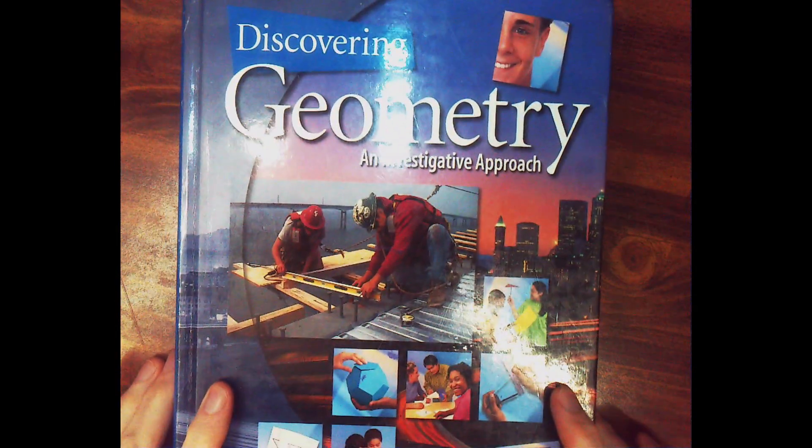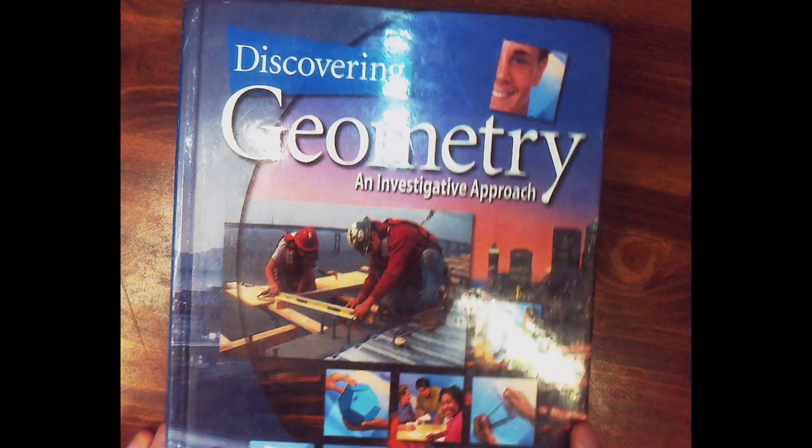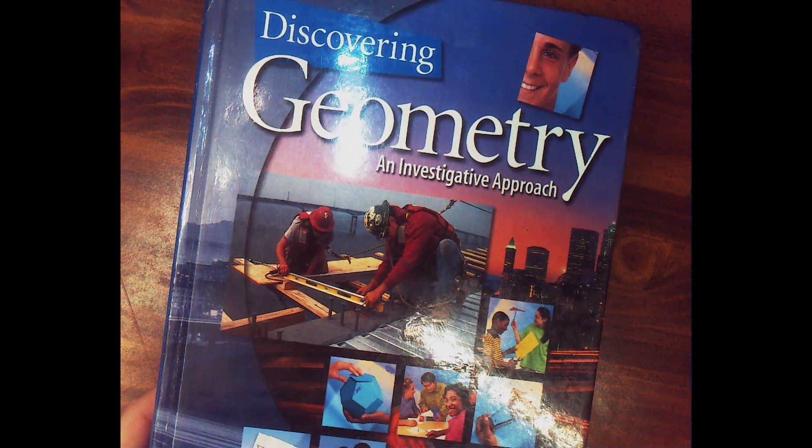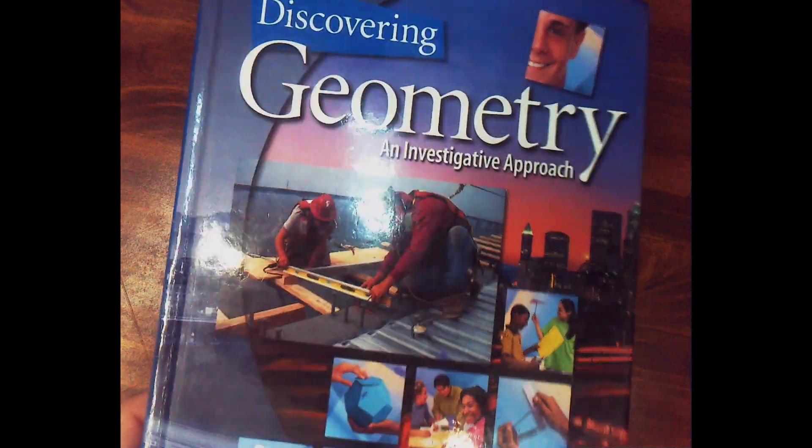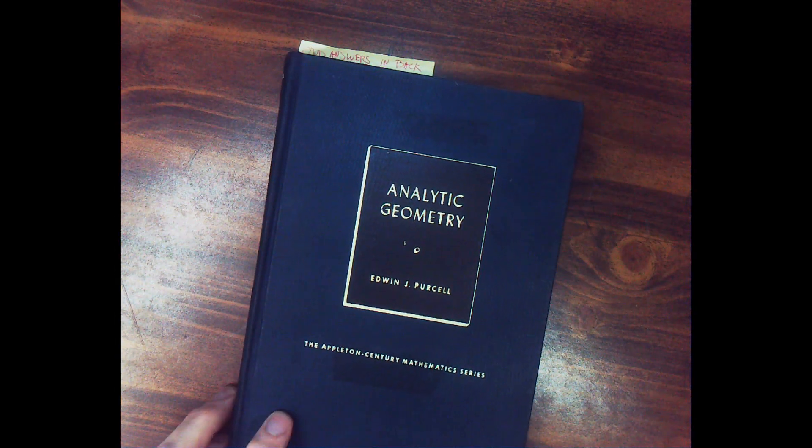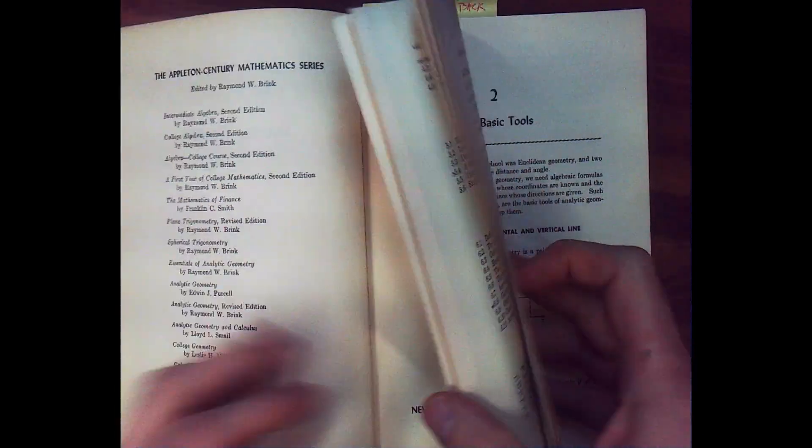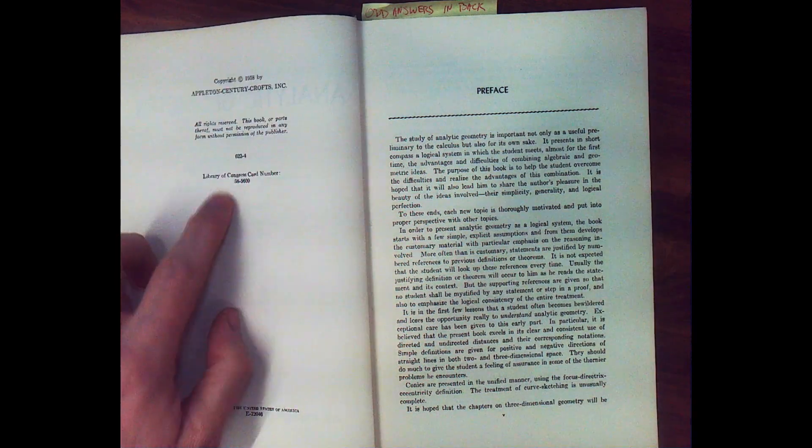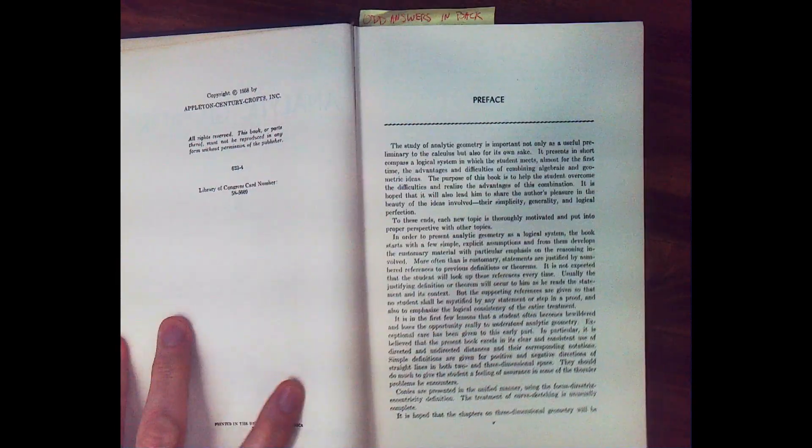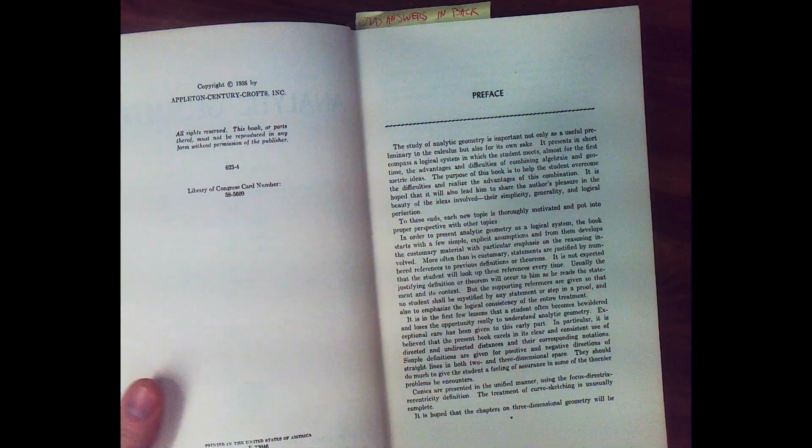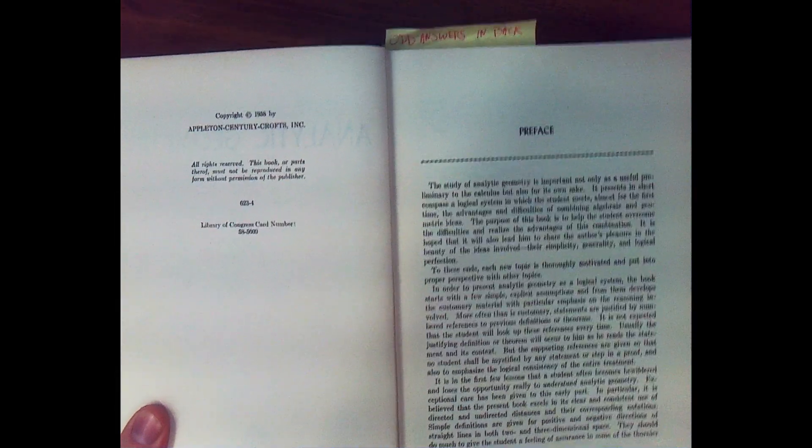So now let's take a look at another textbook, Discovering Geometry. This does not have horizontal and vertical in the index. And now we have a thin little book, Analytic Geometry. This is a nice old school book from the 1950s, 1958. But it does not have horizontal and vertical lines in the index.